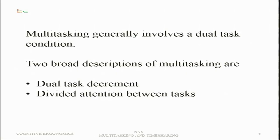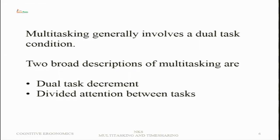Two broad descriptions of multitasking are: dual task decrement — when tasks are carried out concurrently or in sequential order, there is a performance decrement, which will generally be larger in the concurrent condition — and divided attention between tasks. Performance on both tasks may decline, or one may decline more than the other. Because attention gets divided, we may miss certain information or misinterpret certain information.